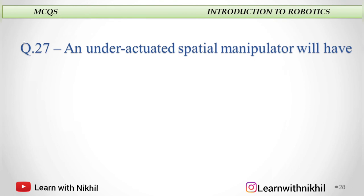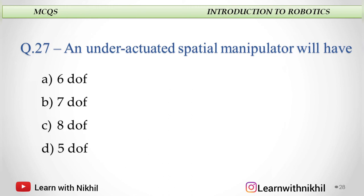Next: An underactuated spatial manipulator will have — six DOF, seven DOF, eight DOF, or five DOF? In a spatial manipulator, we require six DOF. An underactuated manipulator has less than the required six DOF, so anything less than six — that is five DOF — is the answer.